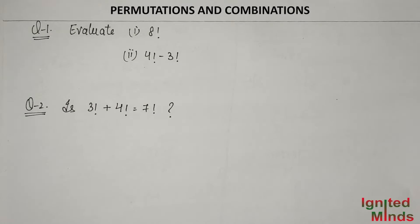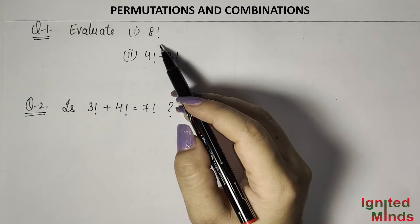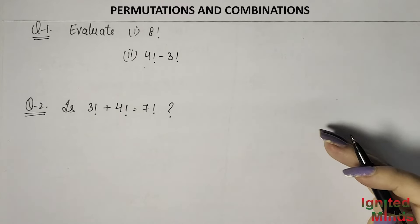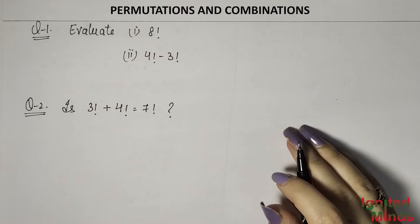Hello students, this is Prajee. Welcome to our channel. Today we are going to do class 11th chapter permutations and combinations exercise. If you have any particular question, you can see the timestamp in the description box. Also, if you haven't seen this before, I have covered factorials — what they are, their notations, and how to solve them. If you missed those basic videos, please check the link in the description box. Let's start.